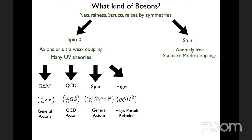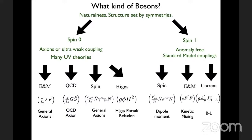For a spin-one boson, there are essentially three possible anomaly-free couplings to the standard model. First, standard model particles may have a dipole moment under the new gauge interaction F'. Second, it can interact with electromagnetism through kinetic mixing — F and F' with mixing parameter ε. Third, standard model particles could be directly charged under the new gauge interaction — the canonical example being B minus L, baryon minus lepton number.